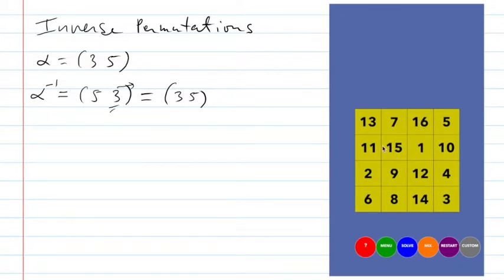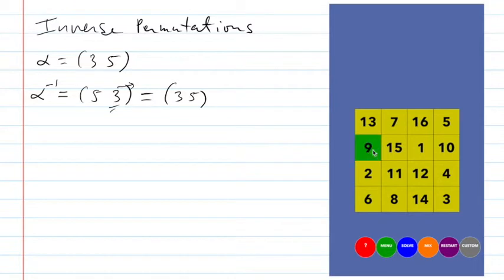Take a look. If I do another one — position five and position ten — that switches those two numbers. Then if I do five and ten again, it gets me back to where I was. So for a two-cycle, the permutation is its own inverse.